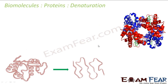Let's talk about the denaturation of proteins. A protein in the biological system has a unique three-dimensional structure, as you can see here. It also has a unique biological activity. This is called native protein.